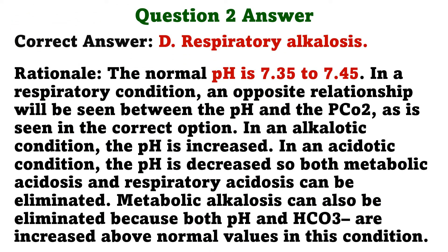The correct answer is D: Respiratory alkalosis. Rationale: The normal pH is 7.35 to 7.45. In a respiratory condition, an opposite relationship will be seen between the pH and the PCO2, as is seen in the correct option. In an alkalotic condition, the pH is increased; in an acidotic condition, the pH is decreased, so both metabolic acidosis and respiratory acidosis can be eliminated. Metabolic alkalosis can also be eliminated, because both pH and HCO3 are increased above normal values in that condition.